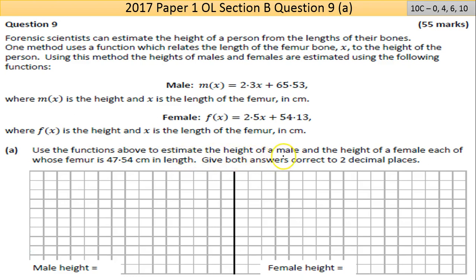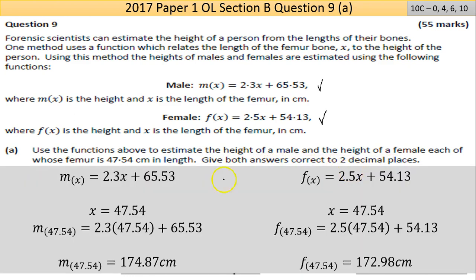Part A says use the functions above to estimate the height of a male and the height of a female, each of whose femur is 47.54 centimeters in length. Give your answers correct to two decimal places. For the male function, 2.3 times 47.54 plus 65.53 equals 174.87 centimeters. For the female function, 2.5 times 47.54 plus 54.13 equals 172.98 centimeters.